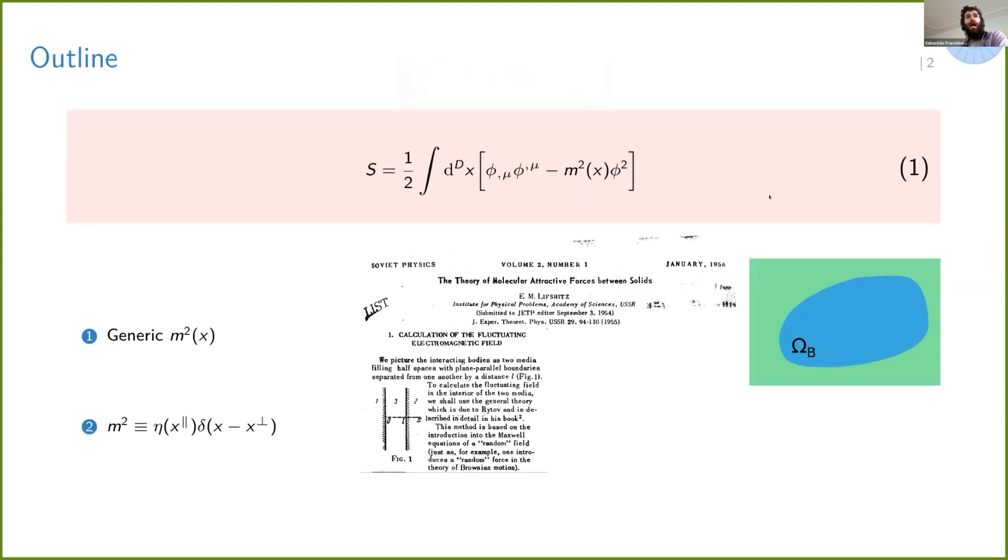So I will be considering the action in equation one. That means I will be considering a scalar field phi, a quantum scalar field phi. It will be mainly in flat spacetime and I will consider a varying mass or if you want a spacetime-dependent mass.